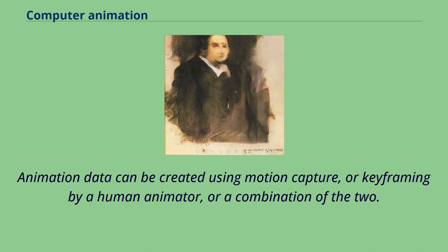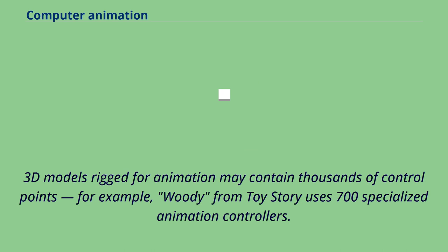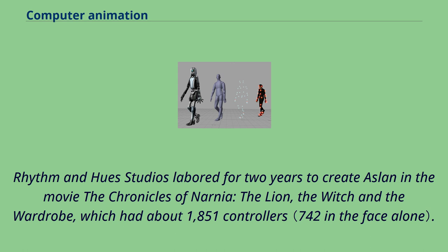Animation data can be created using motion capture, or keyframing by a human animator, or a combination of the two. 3D models rigged for animation may contain thousands of control points — for example, Woody from Toy Story uses 700 specialized animation controllers. Rhythm and Hue Studios labored for two years to create Aslan in the movie The Chronicles of Narnia: The Lion, The Witch and the Wardrobe, which had about 1,851 controllers.